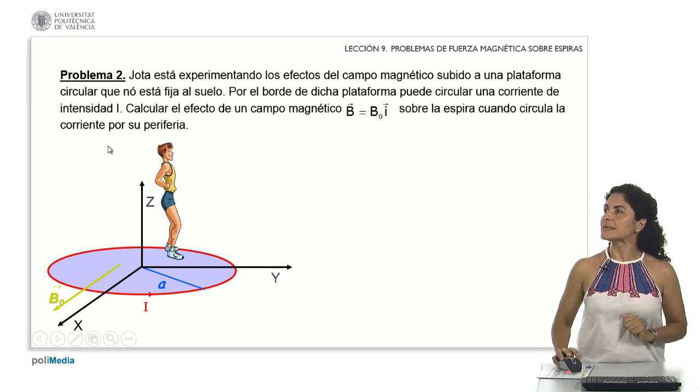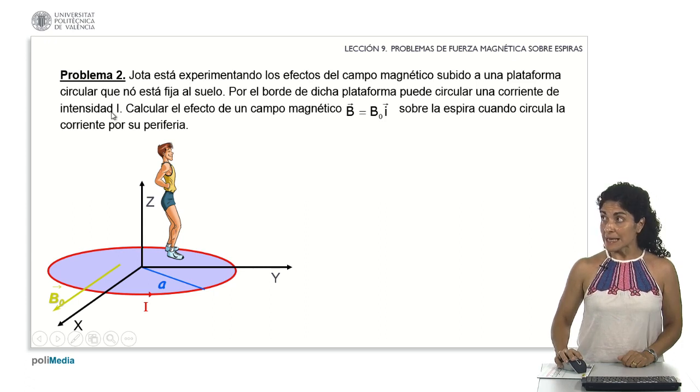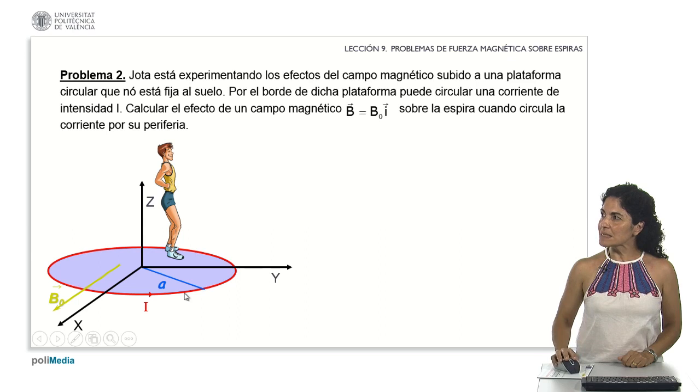Now, let's proceed to a second scenario. Here, Jota encounters the effects of a magnetic field on a circular platform that isn't fixed to the ground and can move in any direction. Along the edge of this platform, a current of intensity I can rotate. I aim to determine the impact of a magnetic field with a magnitude of B sub zero and a unit vector direction I on the loop, while a current flows along its periphery. Here, the diagram indicates the representation of the magnetic field with the current circulating around the surface where Jota is positioned. Let's explore the potential outcomes of this setup.